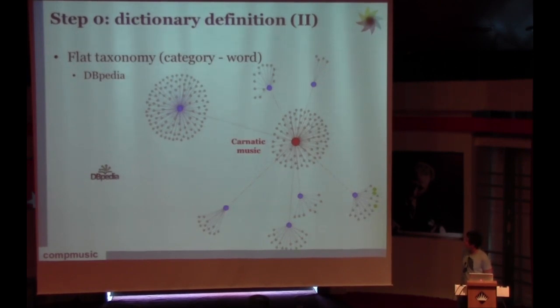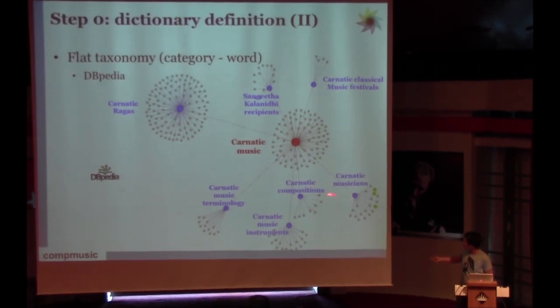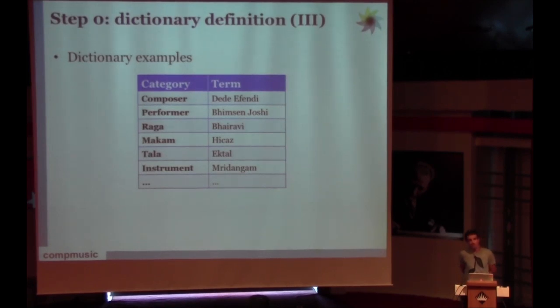We start from the seed category Carnatic music. We can explore this database and go to the subcategories, for example Carnatic ragas, music terminologies, compositions, musicians. There even are sub-subcategories like instrumentalists, singers, composers. And at the end, the leaves are articles in Wikipedia, like there is an article about Veena and about the Mridangam instrument. We combine the information from MusicBrainz and Wikipedia to create a dictionary of terms in this way.